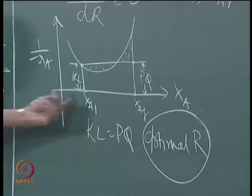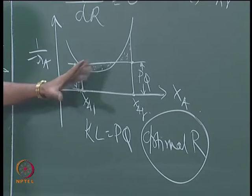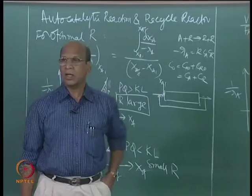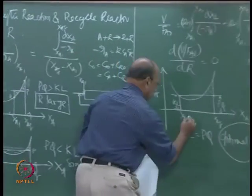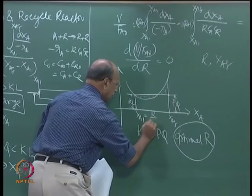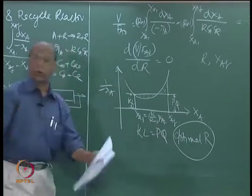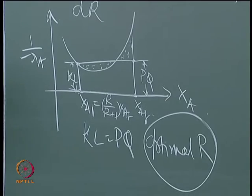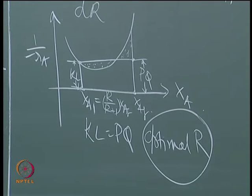How do I get the actual optimal R value from the graph? Once I have the condition that this area equals that area, and PQ equals KL, I know XA1. Since XA1 equals R/(R+1) times XAF, and XAF is already fixed, one can easily estimate the optimal R.